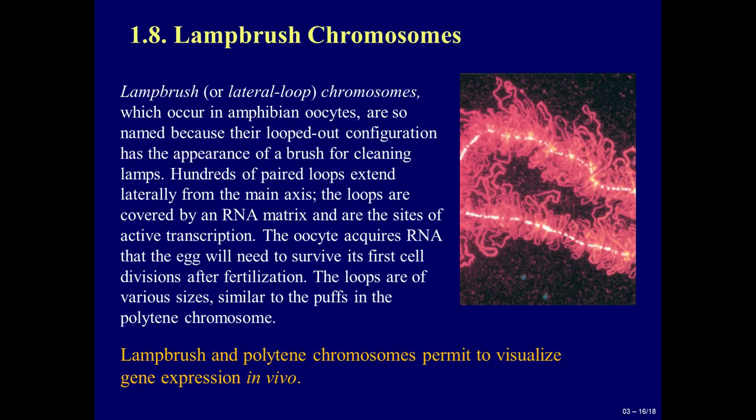Lampbrush chromosomes: lampbrush or lateral loop chromosomes, which occur in amphibian oocytes, are so named because their looped-out configuration has the appearance of a brush for cleaning lamps. Hundreds of paired loops extend laterally from the main axis. The loops are covered by an RNA matrix and are the sites of active transcription. The oocyte acquires RNA that the egg will need to survive its first cell divisions after fertilization. The loops are of various sizes, similar to the puffs in polytene chromosomes. Lampbrush and polytene chromosomes permit visualization of gene expression in vivo.